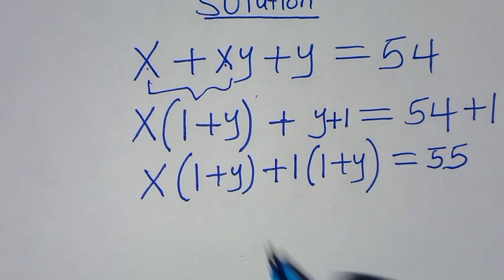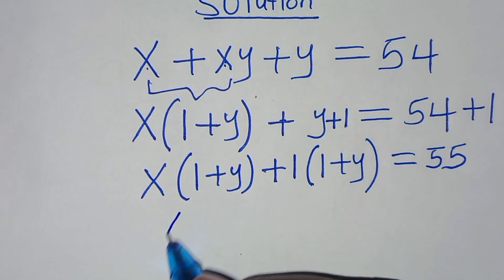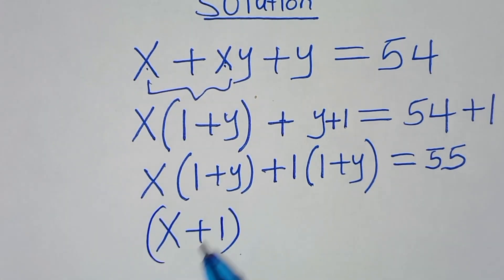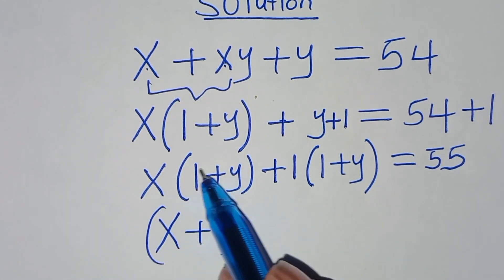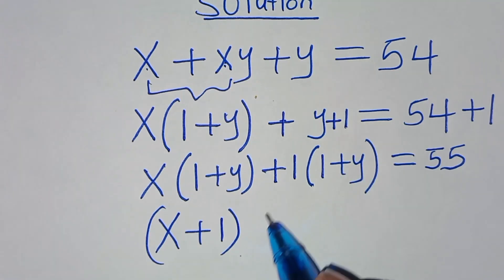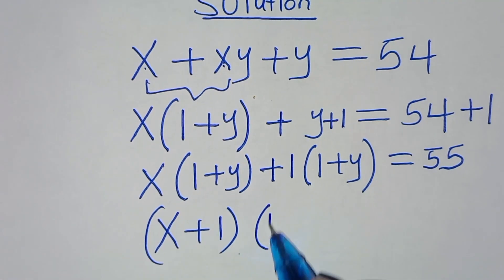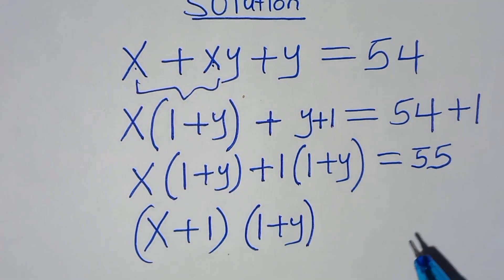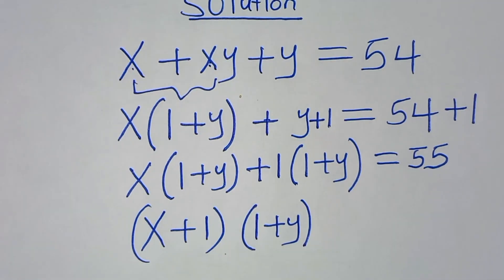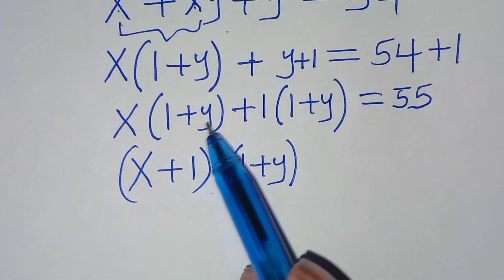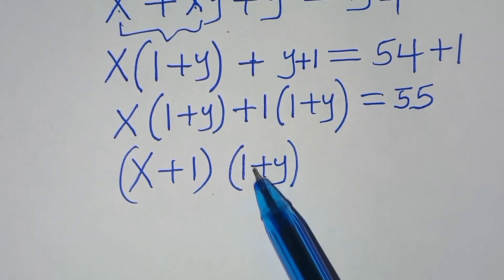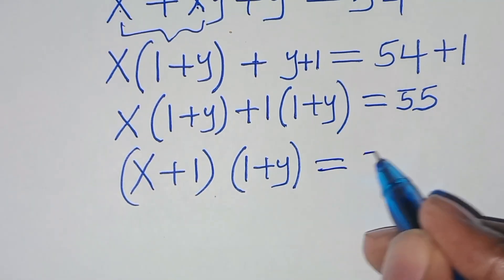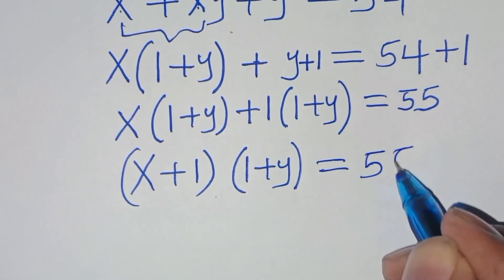The next step from here: we have x plus 1, and since 1 plus y is common here, we factor out 1 plus y, giving us (x plus 1)(1 plus y), this is equal to 55.